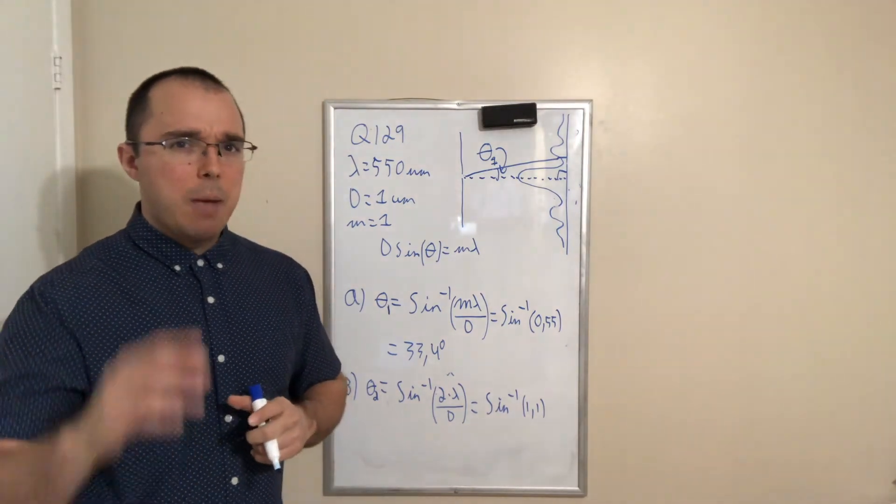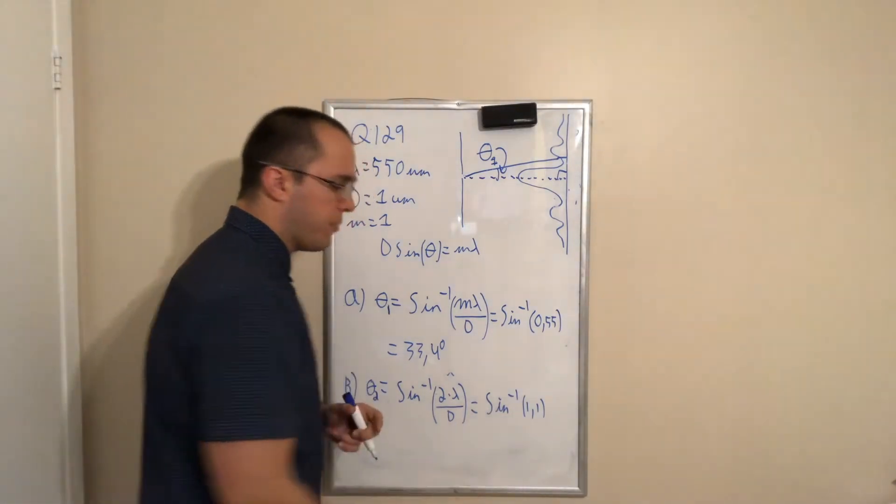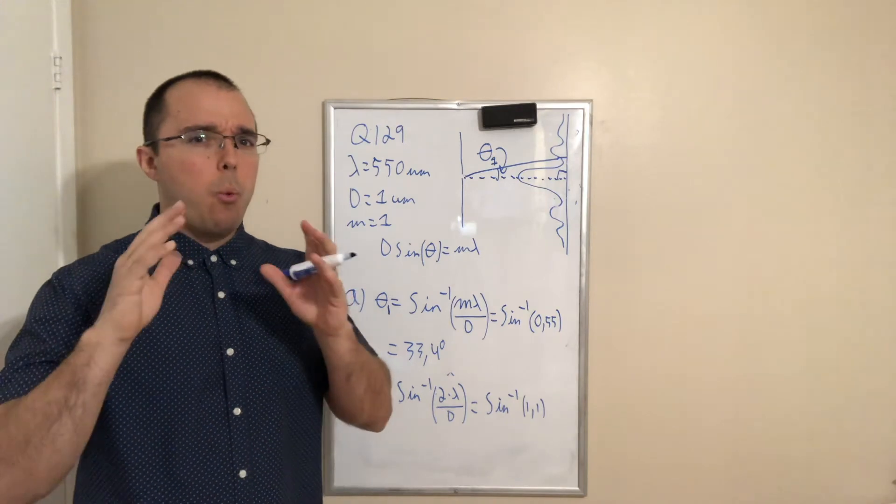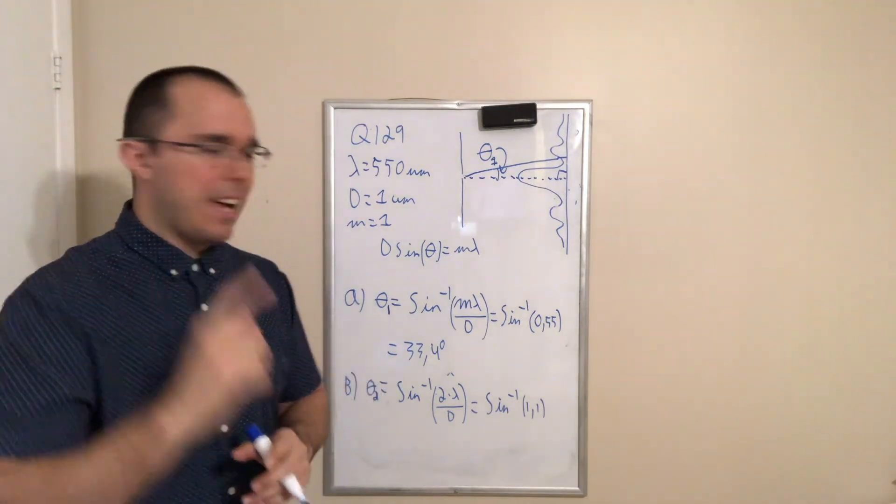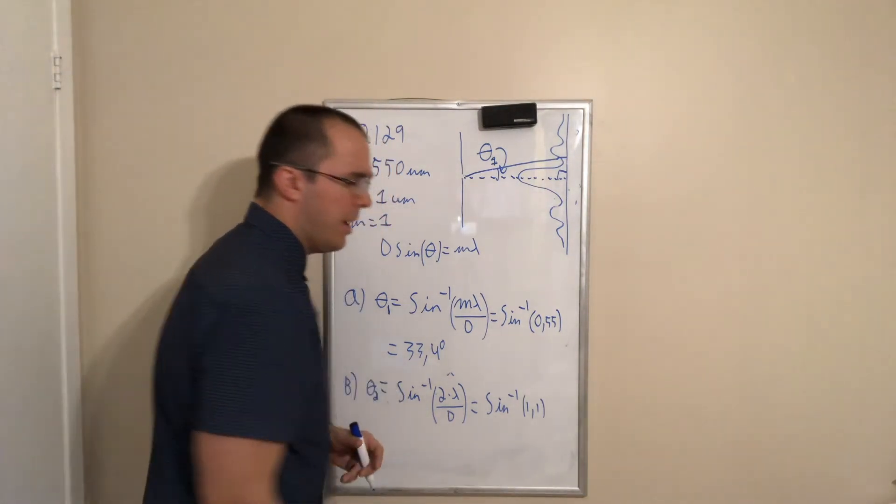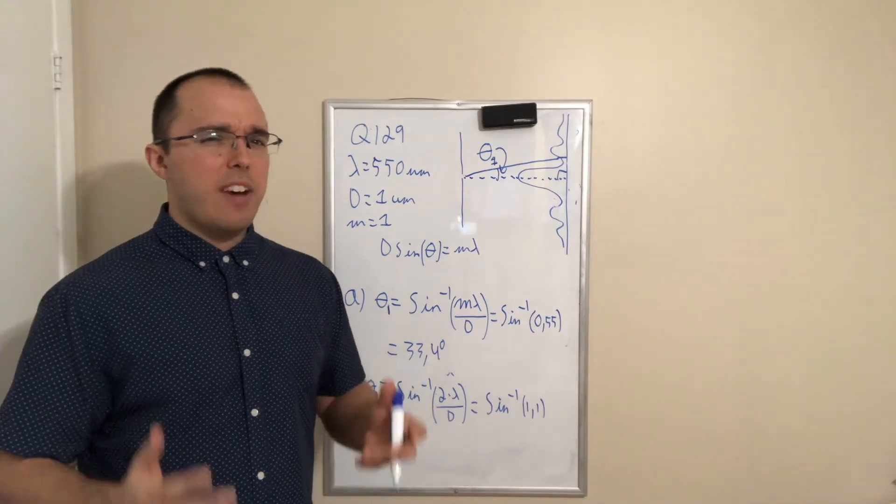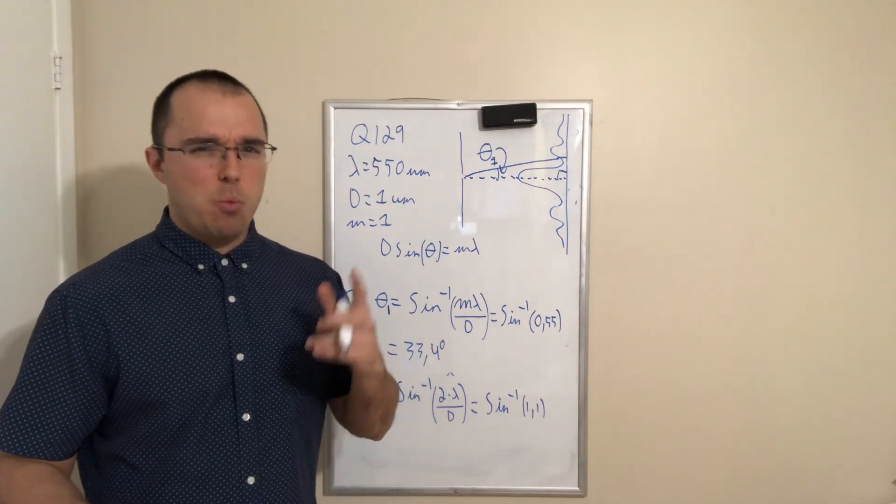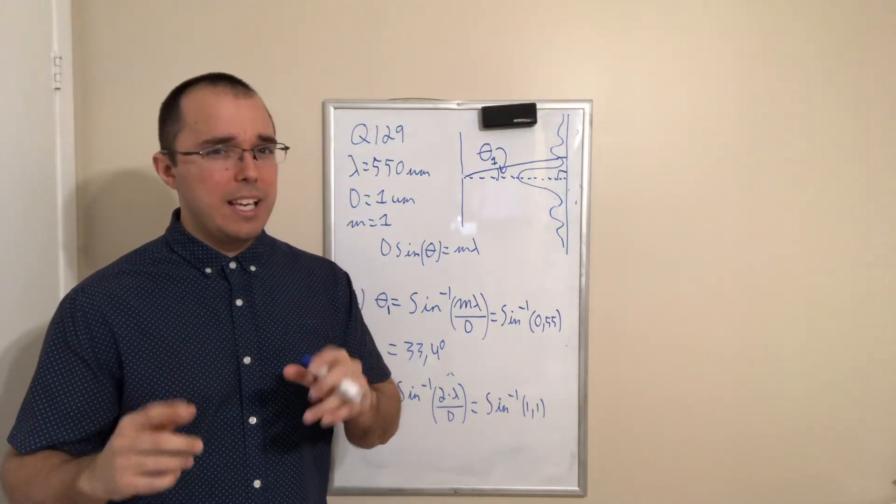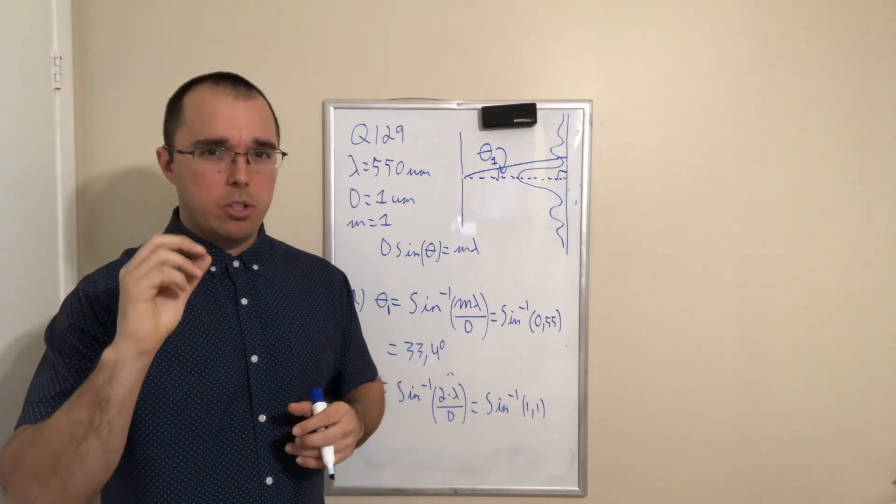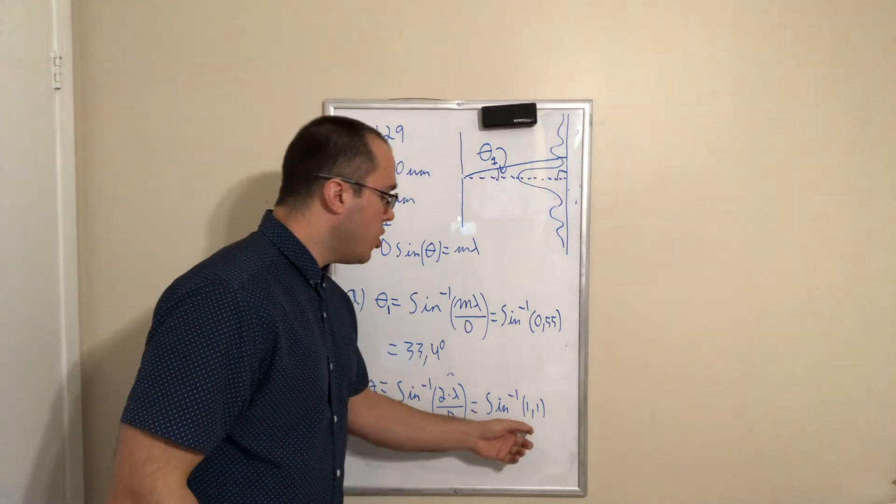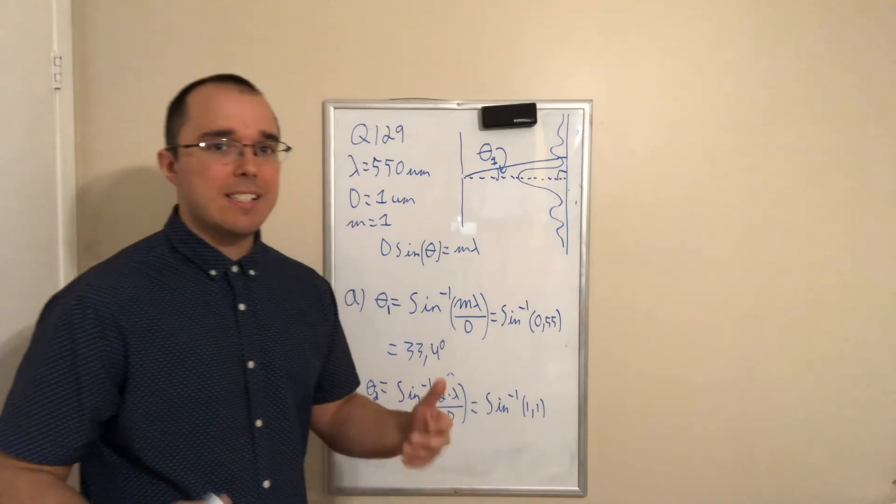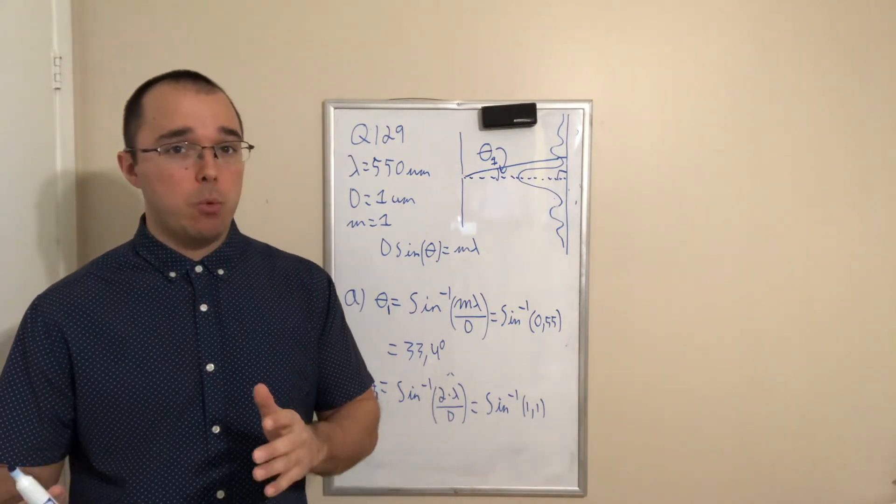Now, that causes a problem, because the inverse function of sine tells you for which angle will sine be equal to 1.1. Well, the highest value that sine can get is 1, and this is only if the angle is equal to 90 degrees. So that means there is no angle for which sine becomes 1.1.